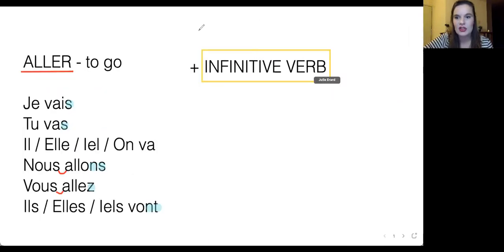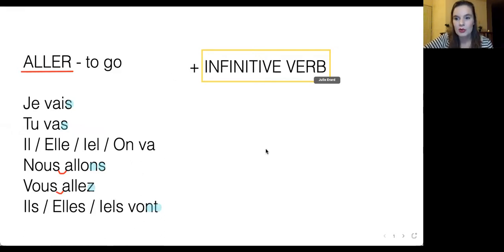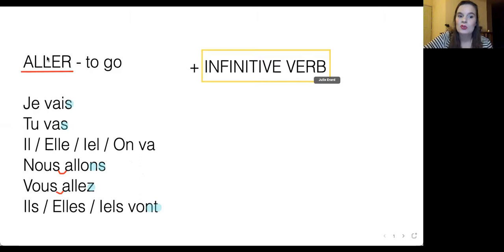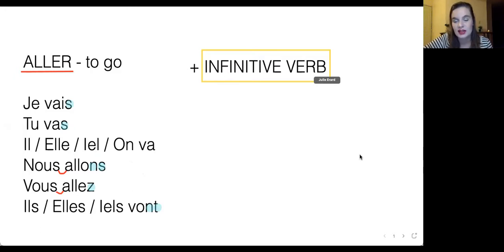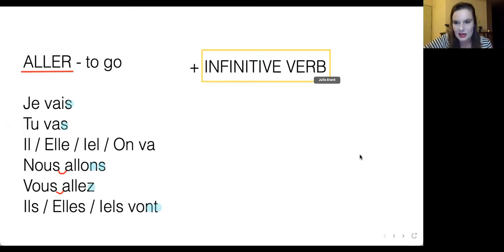I'm going to open my whiteboard — I've prepared some explanations on here. So how are we going to build this? A little bit like in English when we say 'I'm going to' and we add a verb to that. Same in French. We're going to use the verb aller, which means 'to go,' and we're going to add an infinitive verb to it. An infinitive verb means non-conjugated — so in French: être, avoir, aller, prendre, manger, regarder, etc.